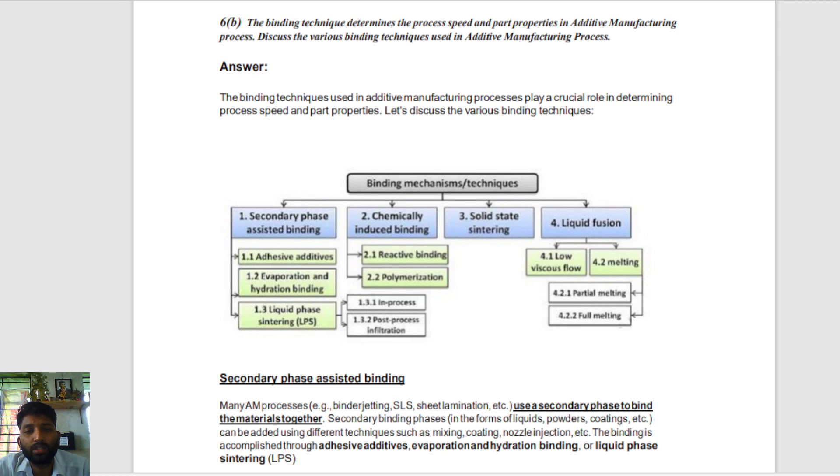There are different binding techniques, and these different binding techniques will have different properties. Those properties will decide the speed of the additive manufacturing process. The properties of binding materials affect the speed of additive manufacturing and other factors.